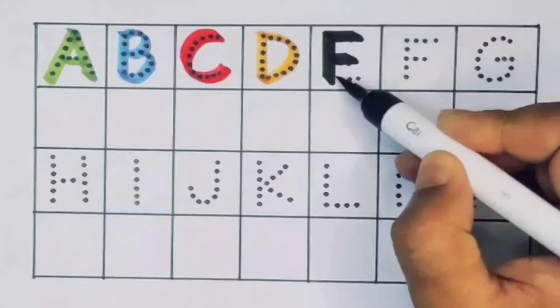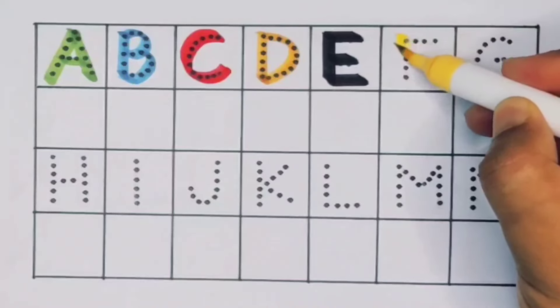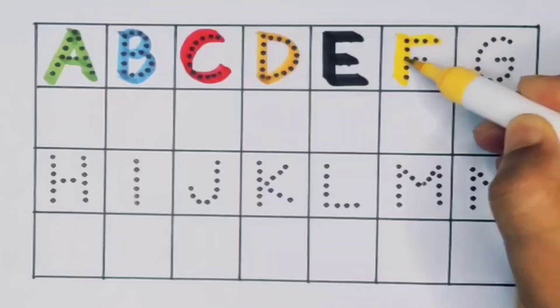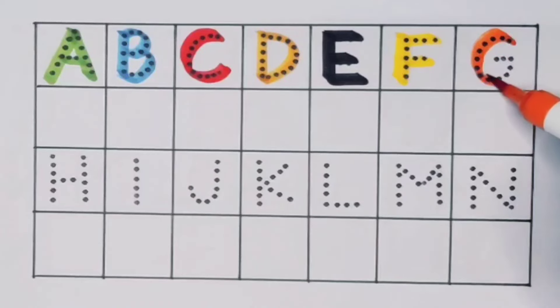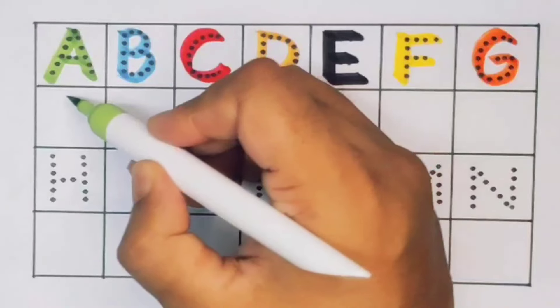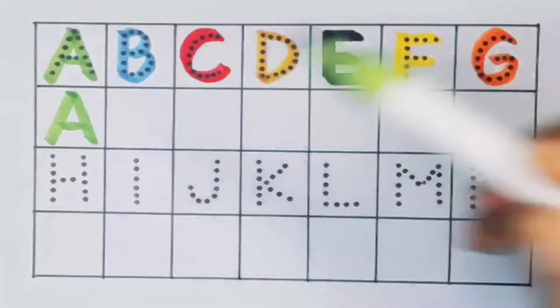Next F, F for fire. Next G, G for gorilla. Repeat again: A, A for aeroplane. Next B...